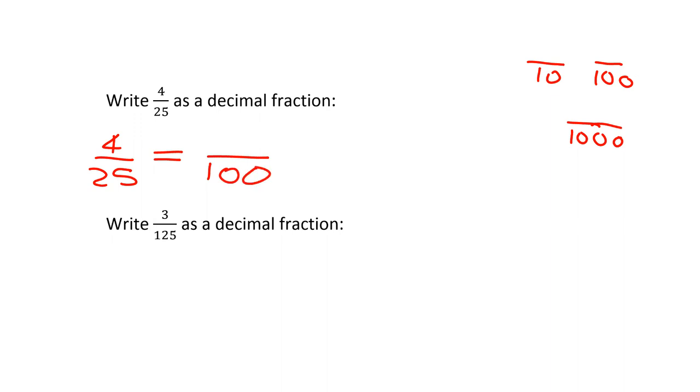Now I need to find the equivalent—well I know that what I've done to the bottom is multiply by 4, so to make an equivalent fraction what I do to the bottom I must do exactly the same to the top, so I must multiply this top by 4 and I will get 16. So I've got 16 over a hundred and that is very easy to turn into a decimal.